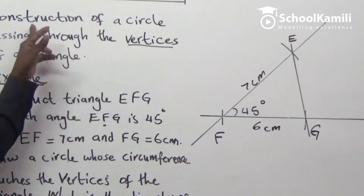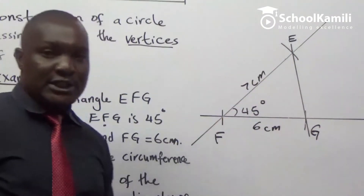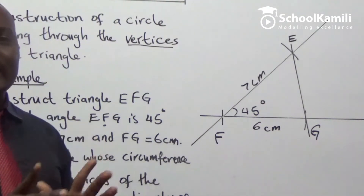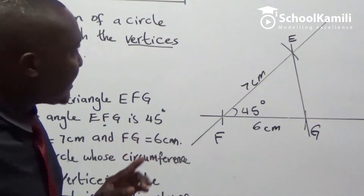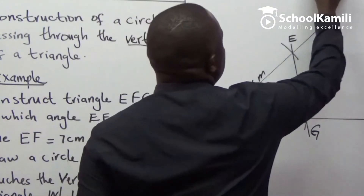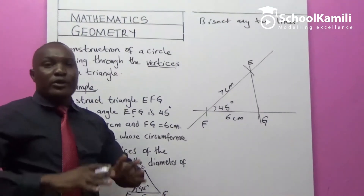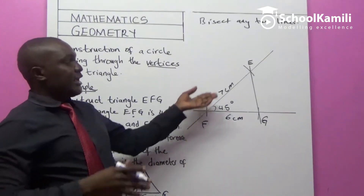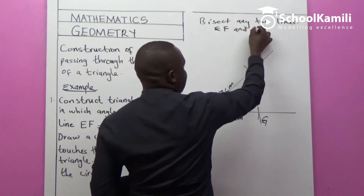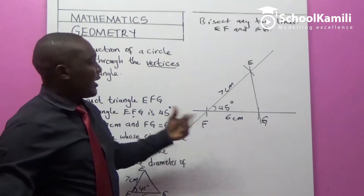What remains now is constructing a circle that passes through the vertices — those are points E, F, and G. Here is the key: you bisect any two lines of the triangle. Bisect any two lines — that means dropping a perpendicular bisector. Here we will bisect line EF and line FG.